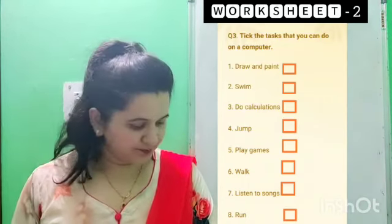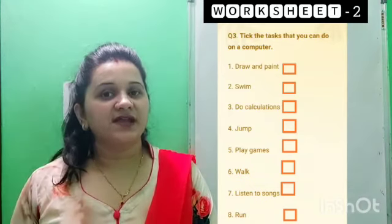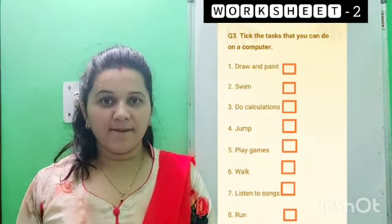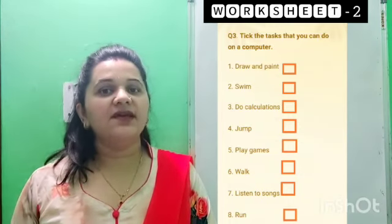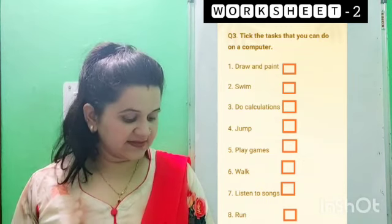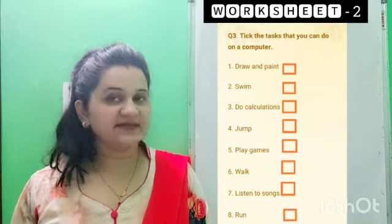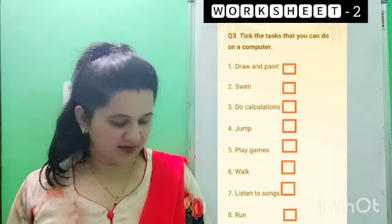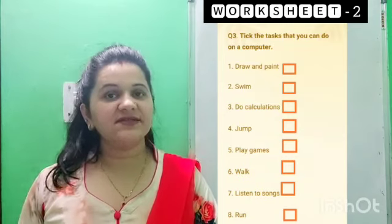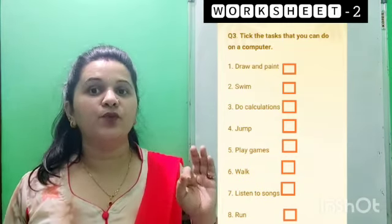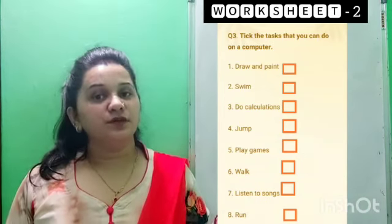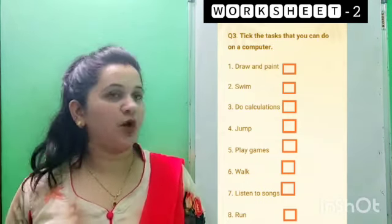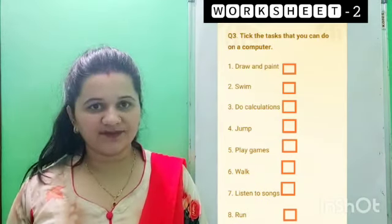The second task is swim. Third one: do calculations — calculations means plus and minus. Fourth: jump. Fifth: play games. Sixth: walk. Seven: talk. Listen to songs. And eighth: run. So here eight tasks are written. Find out which of them can be done on a computer. For the tasks that can be done on a computer, put a tick mark inside the boxes given in front of each one.